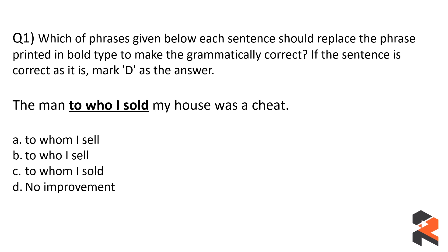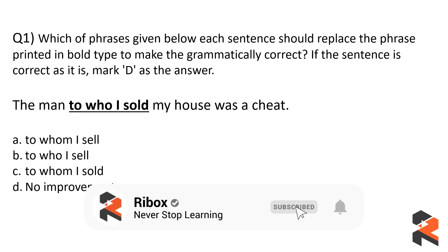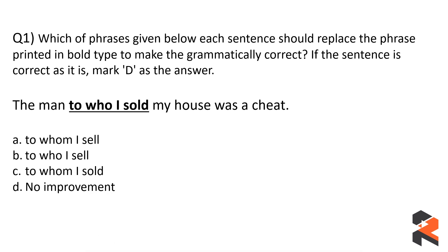The sentence is: 'The man to who I sold my house was a cheat.' We have four options and we have to select which will replace the underlined part. When we use the word 'who,' it is typically for questions; however, in this sentence we are not asking a question — we are referring to a certain person about whom the man is talking. So first of all, 'who' should be replaced with 'whom.' We have two options with 'whom': option A and option C.